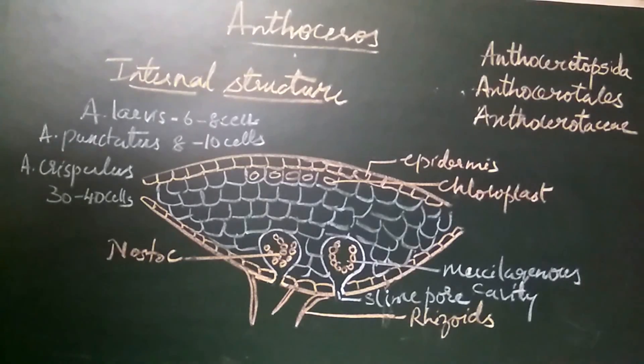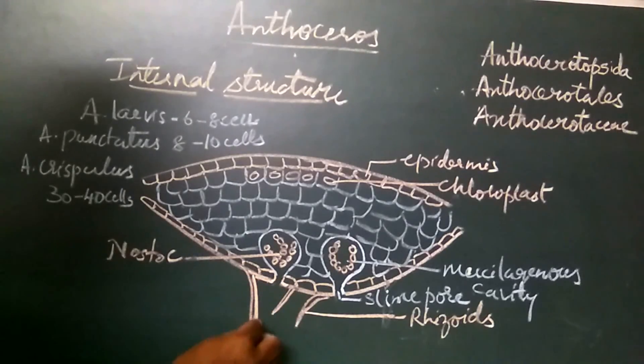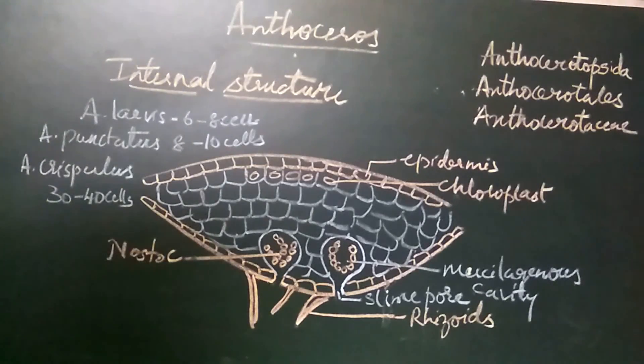From the lower epidermis, we can see the unicellular smooth-walled rhizoids growing. The rhizoids help the thallus to fix to the substratum and conduction of water. The thallus grows by means of apical cells.